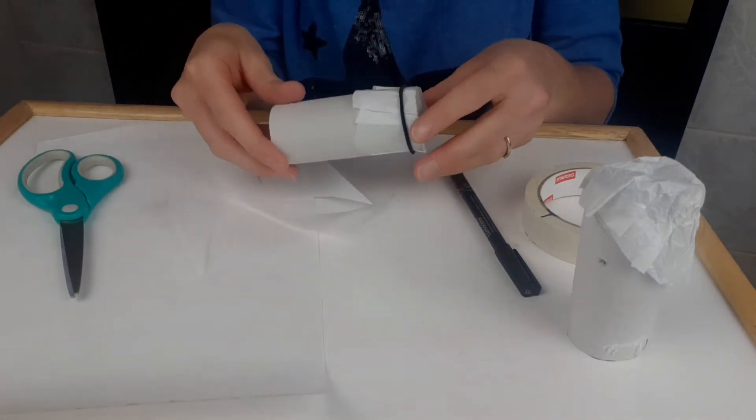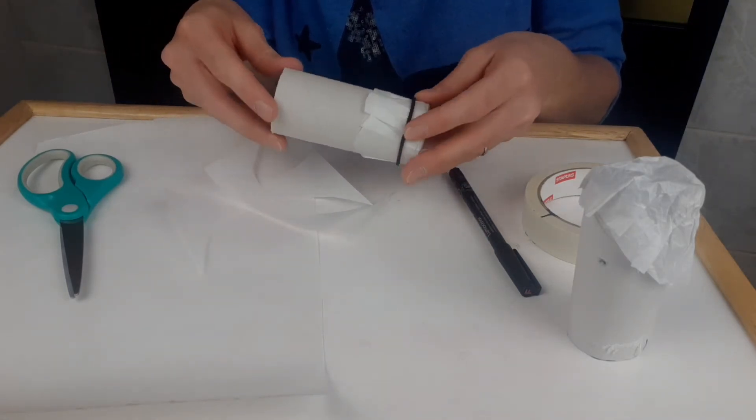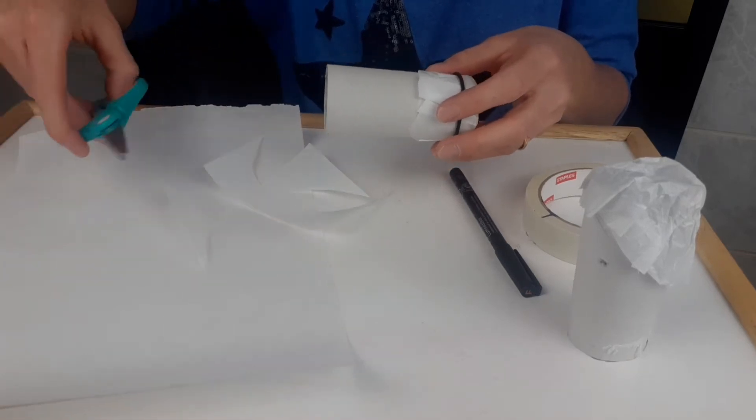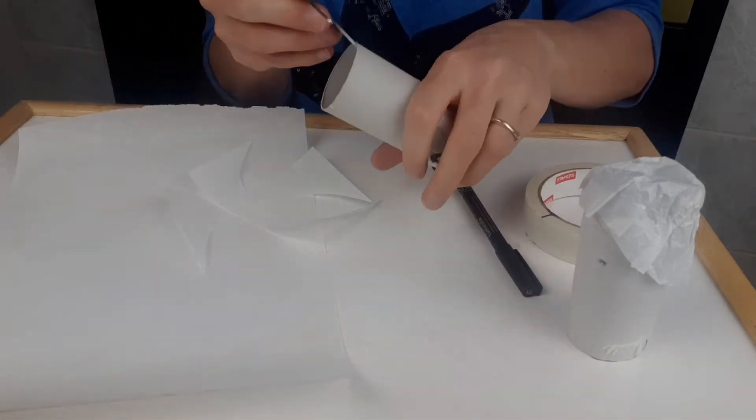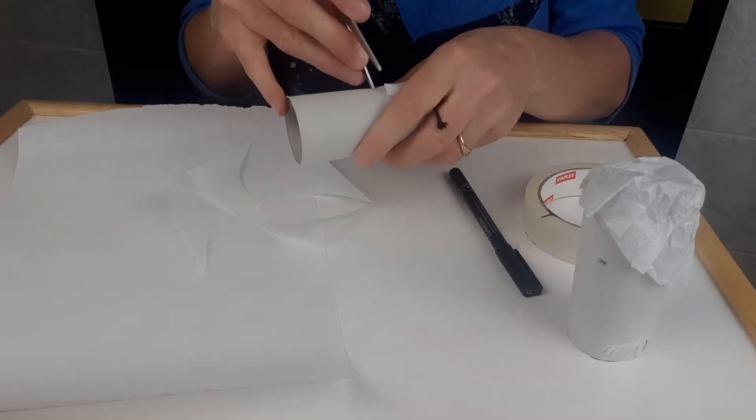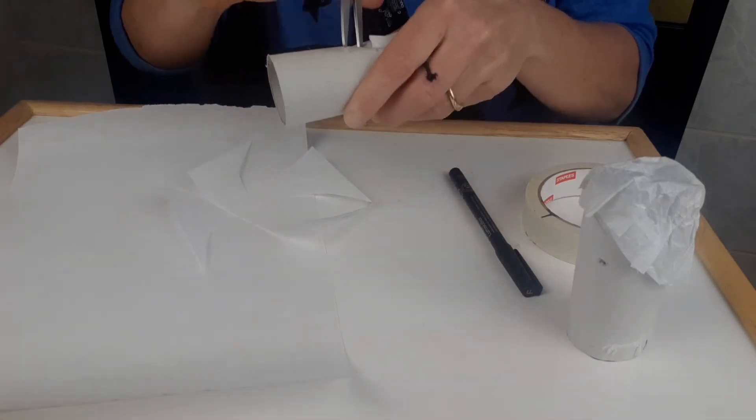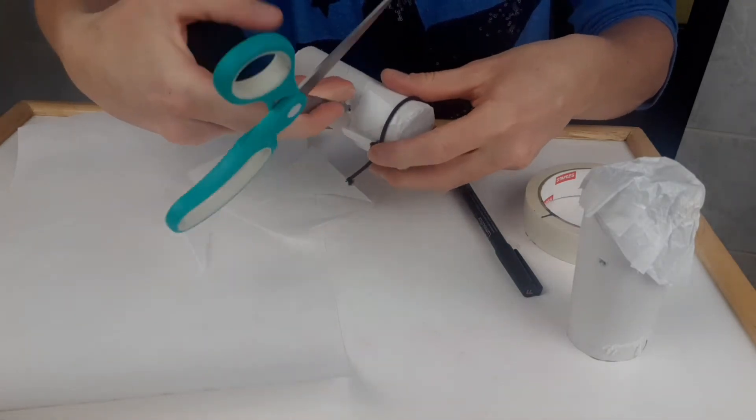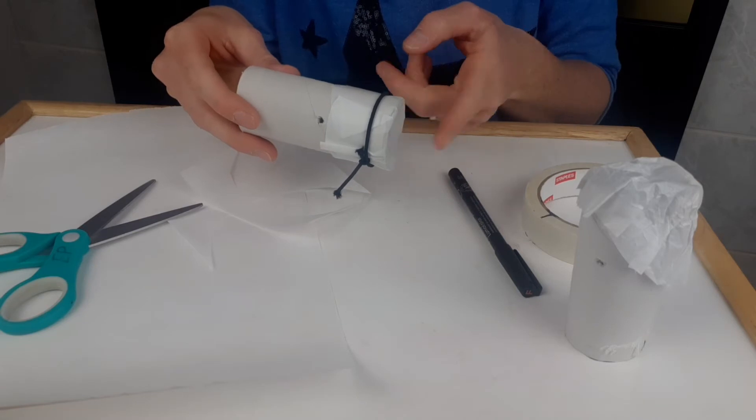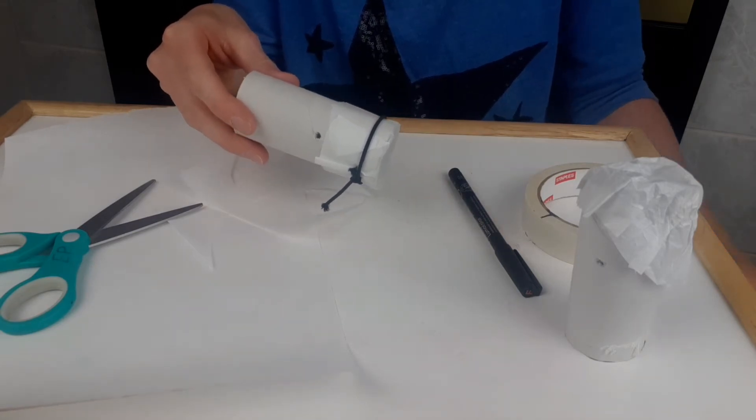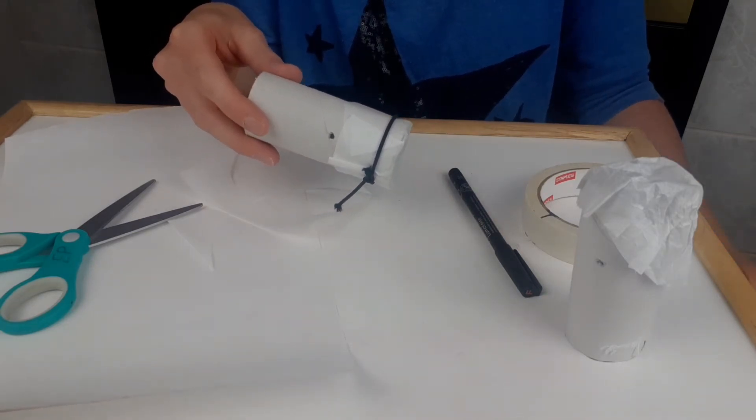Here's a really important part that sometimes is missed when we're making homemade kazoos. You want to take your scissors, definitely get some adult help with this, and make a small hole. There we go. This hole is going to be really important for allowing our wax paper to resonate when we blow through it.